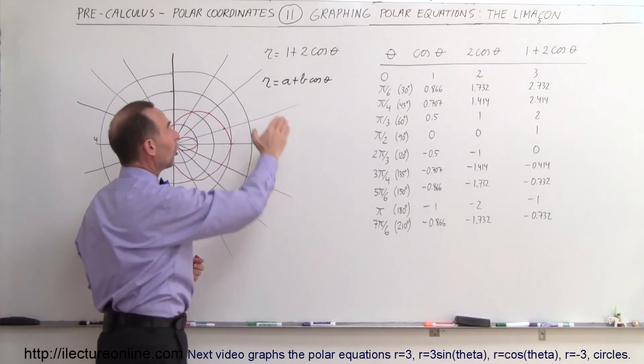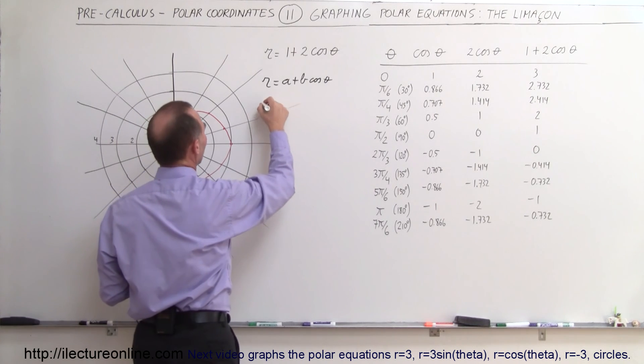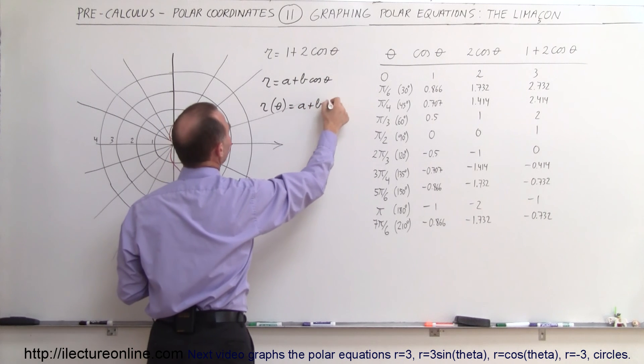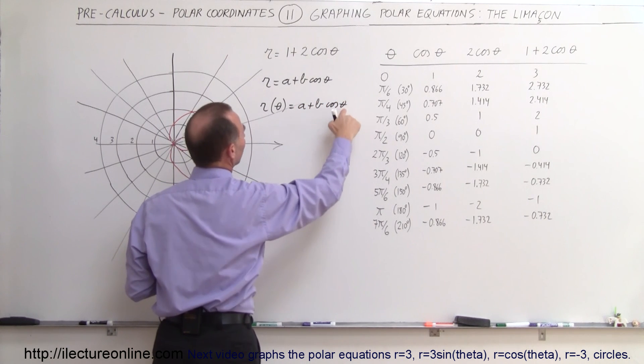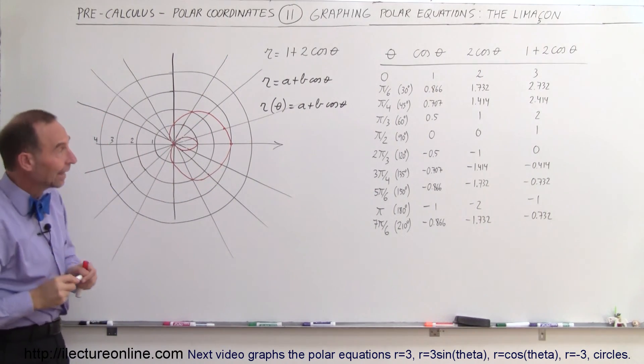So those are the values of r for particular values of the angle. And so, after all, it is r as a function of theta. So another way of writing that would be we're graphing r, which is a function of theta, is equal to a plus b times the cosine of theta. So we plug in a value for theta and we'll get a corresponding value for r. And that's how we graph these.